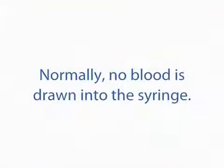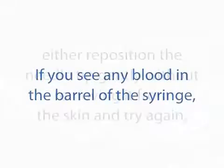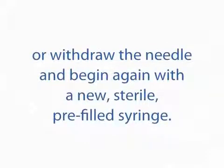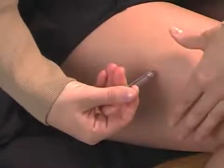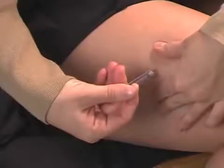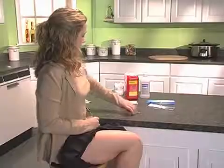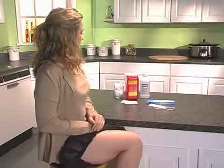Normally, no blood is drawn into the syringe. If you see any blood in the barrel of the syringe, either reposition the needle tip gently without removing it from the skin and try again, or withdraw the needle and begin again with a new sterile pre-filled syringe. Once the needle is properly positioned, push slowly and steadily on the plunger to administer all the medication. Withdraw the needle quickly and apply pressure to the injection site with an alcohol pad. Use the pre-filled syringe only once and dispose of the used syringe in your safety container.